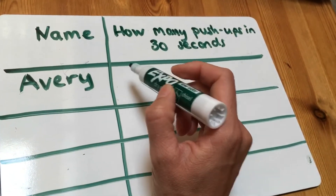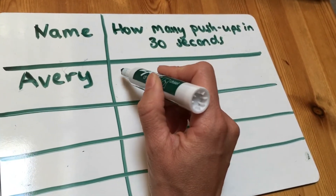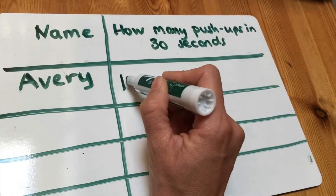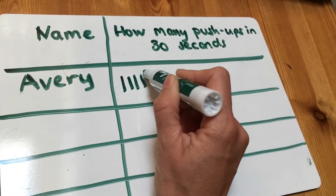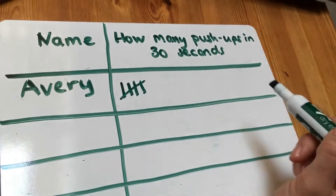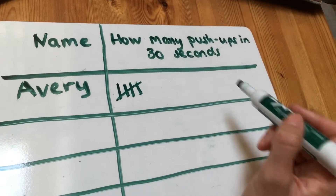So for tallies, we go like this: 1, 2, 3, 4, and then 5 is the gate.